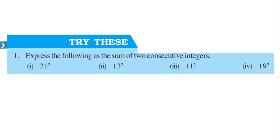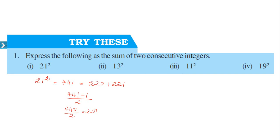Now try this: express the following as the sum of two consecutive integers. The first example is 21². 21² is 441. To express it as the sum of two consecutive integers: (441 − 1) / 2 = 440 / 2 = 220. So 21² equals 220 plus 221. Now try 13², 11², and 19² — express these as the sum of two consecutive integers.